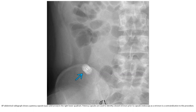Patency capsule: in the right lower quadrant, patency capsules are used to identify a bowel stricture prior to capsule endoscopy, as the stricture is a contraindication to this procedure.